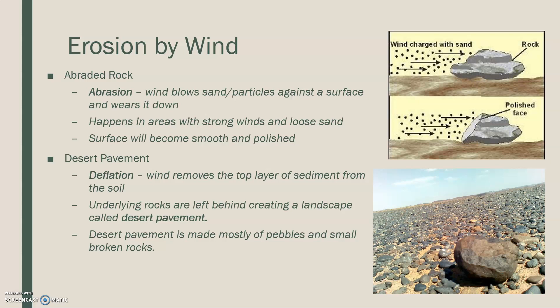Desert pavement. Deflation is something that occurs because wind removes the top layer of sediment from the soil. Basically, in a desert, there's not a lot of trees or shrubs or bushes. Because of that, it's just a wide open plain, such as in this picture. Deflation is the movement of material from on top of the sediment, creating unstable soil. Underlying rocks often get left behind, creating what we would call a desert pavement.